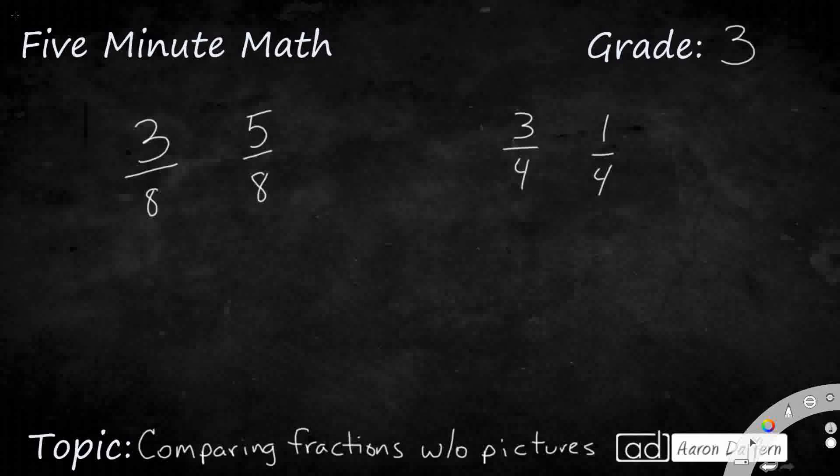We could do the same thing over here with our 3-4ths and our 1-4th. If we know that they're both looking at 4ths, so that means each piece is the same size, 3 is going to be bigger than 1. Because I'm going to take 3 pieces, and that's going to be more than 1 piece. That's the easy part.